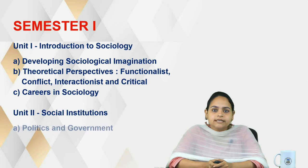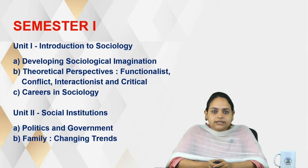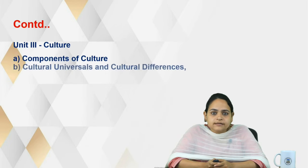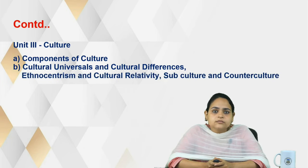The next unit, Unit 2, is Social Institutions. It includes a detailed study of the three main social institutions in our society: Politics and Government, the changing trends in the institution of family, and the institution of religion. In Unit 3, titled Culture, it includes subtopics like the components of culture and various concepts like cultural universals and differences, ethnocentrism, cultural relativity.